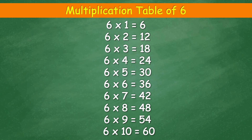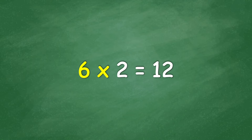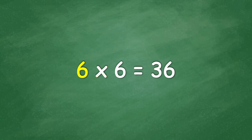Multiplication table of 6. 6 times 1 equals 6. 6 times 2 equals 12. 6 times 3 equals 18. 6 times 4 equals 24. 6 times 5 equals 30. 6 times 6 equals 36. 6 times 7 equals 42.